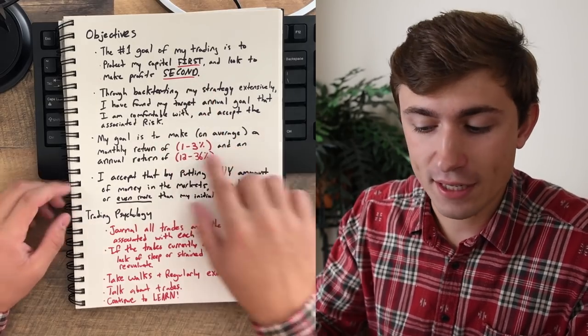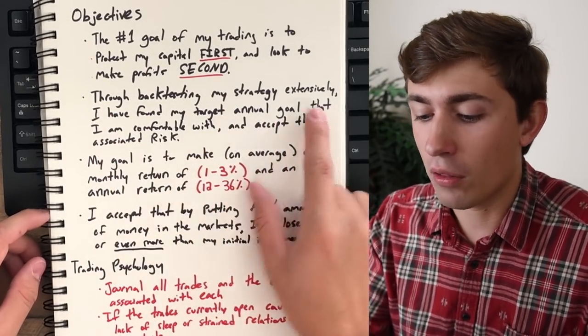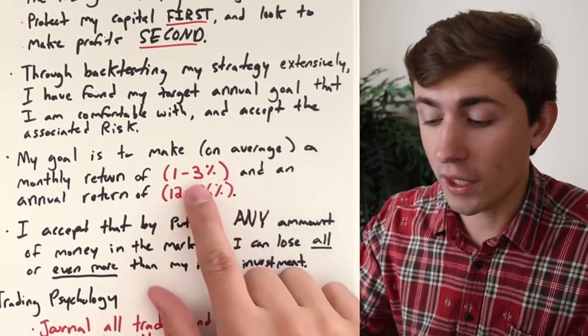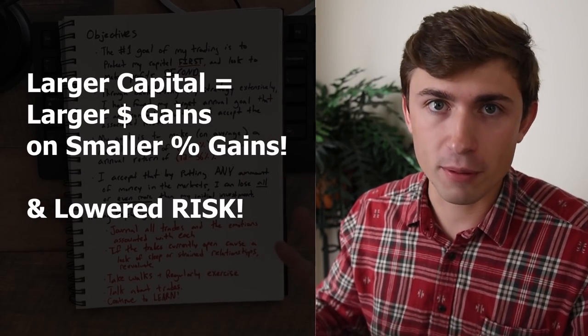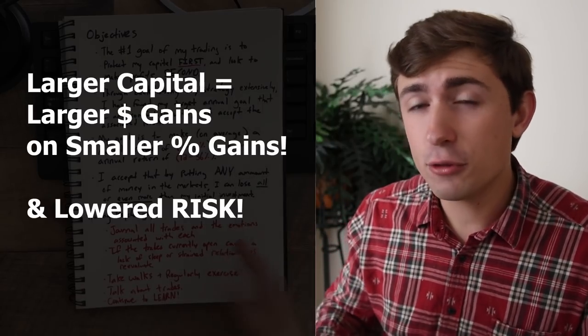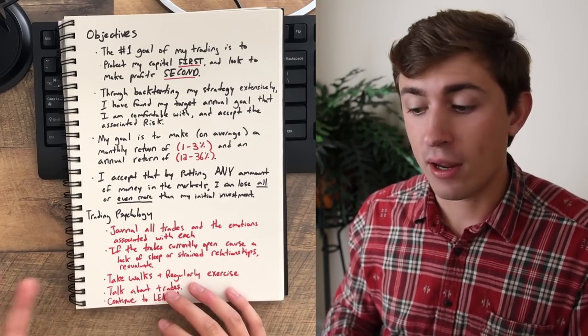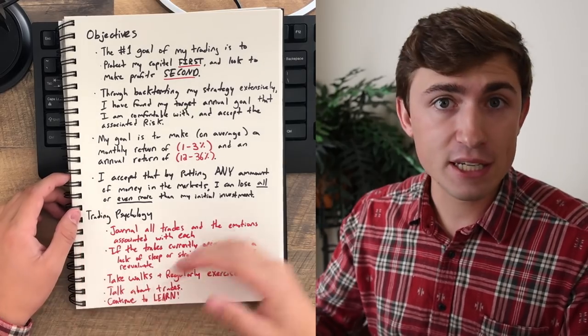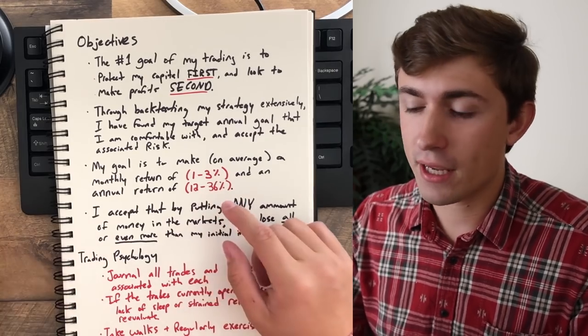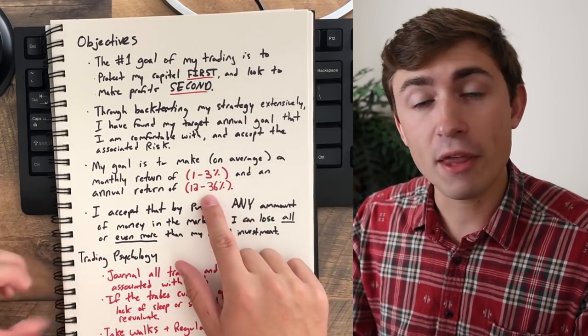Making profits is going to be a second through back testing. My strategy extensively. I've found that my target annual goal that I am comfortable with and accept the associated risk is going to be on average, a monthly return of one to 3% and an annual return of 12 to 30%. Whoa, Nick, did you just say you're only going to shoot for 12 to 36% per year? That seems ridiculous, right? Well, maybe for you, but for me, I'm working with a larger amount of capital. And again, my goal is to keep that risk very, very low because this is capital that I can afford to lose, but I really prefer not to.